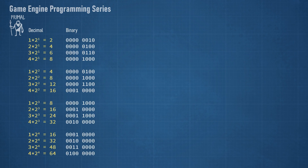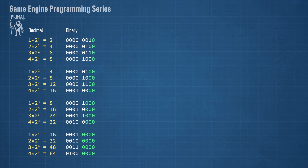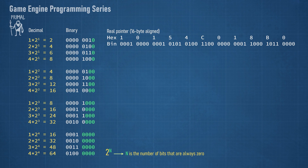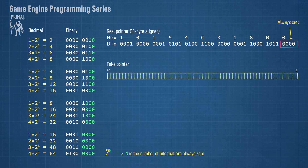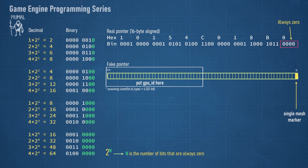If you look at the binary representation of a number that's a multiple of powers of 2, we see that the least significant bits are always 0, depending on the alignment. For example, for any number that's a multiple of 2, only the least significant bit is always 0. Numbers that are multiples of 4 have their two least significant bits zeroed; first 3 bits for multiples of 8, and so on. The pattern is that the number of least significant bits that are always 0 equals the value of the power of alignment. So for 16-byte alignment, the 4 least significant bits are always 0, because 16 is 2 to the power of 4. That means we are free to use these 4 bits to mark an item as not being a pointer. So I'll create a fake pointer here that has its least significant bit set, and then put the GPU ID in the most significant bits.